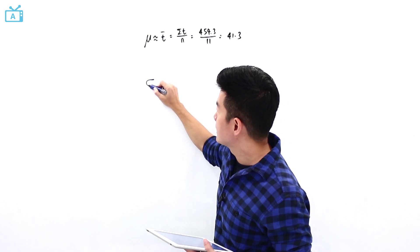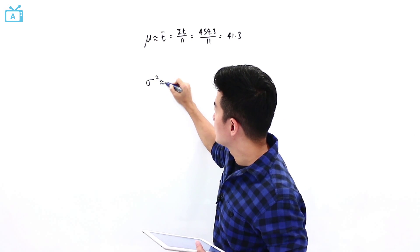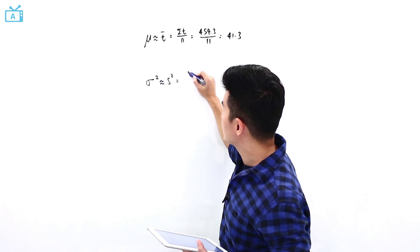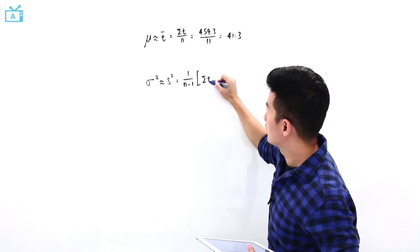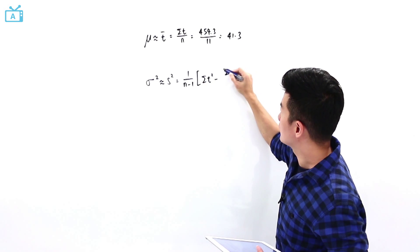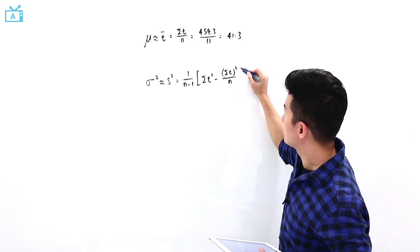And we also need to find the unbiased estimate of the population variance, which can be estimated by the formula for s-square. This is inside our formula sheet. It is a summation of t-square minus summation of t, the whole thing square, divided by n.